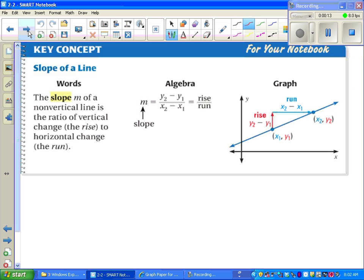You might remember from Algebra 1, to find the slope of a line, you calculate the rise over run. Here's a formula for that: y2 minus y1 over x2 minus x1. In the graph, the rise is the y change, the run is the x change.